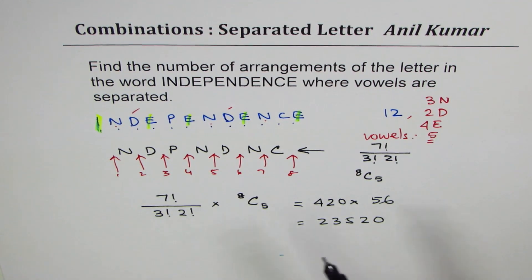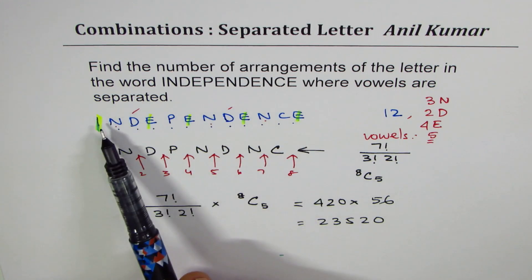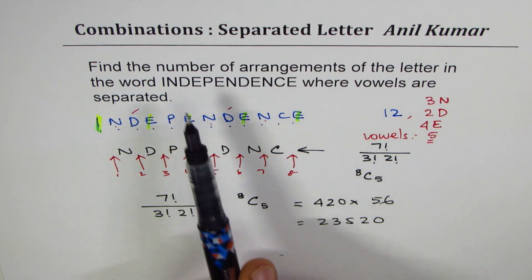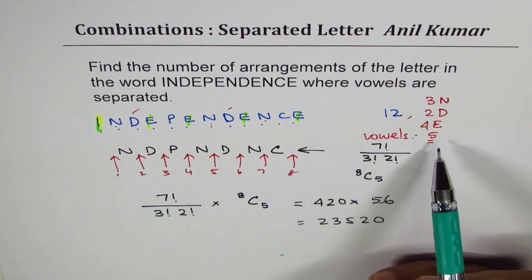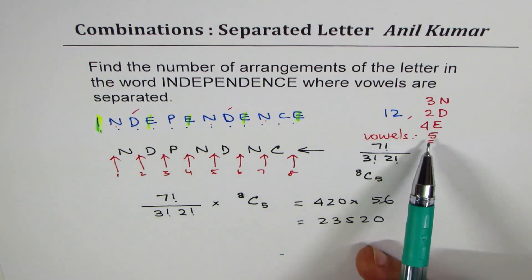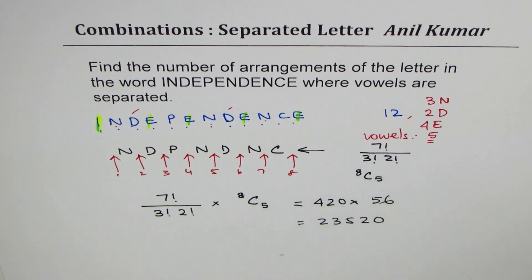This is very important. Now, if you follow a method of finding total number of words formed from independence, taking away where vowels come together, you'll get a wrong answer. The reason is that we are also excluding the cases where 2 vowels are together, 3 vowels are together, 4 vowels are together. Do you see that? You have only considered 5 vowels together. And that's why your answer was wrong. So, this is just the right approach whenever we have more than 2 things to be separated.